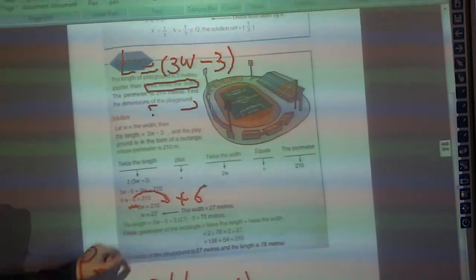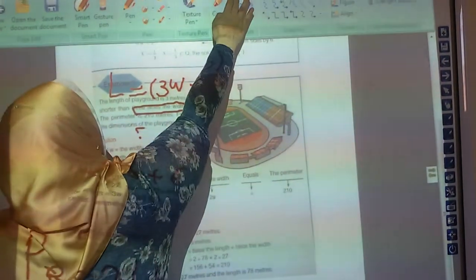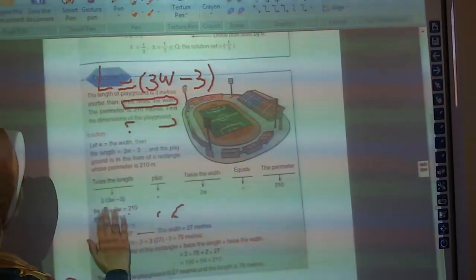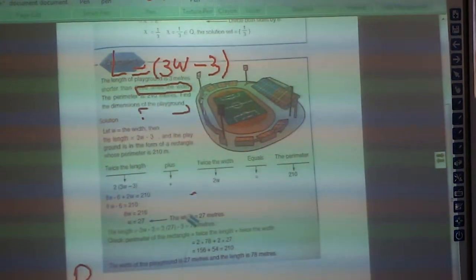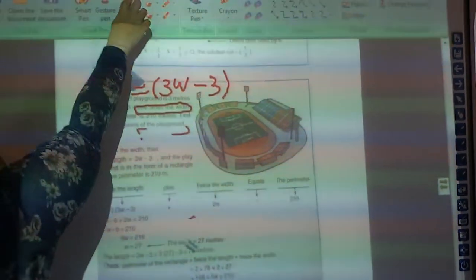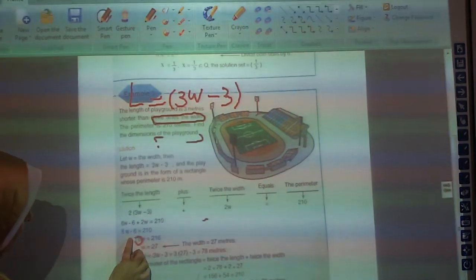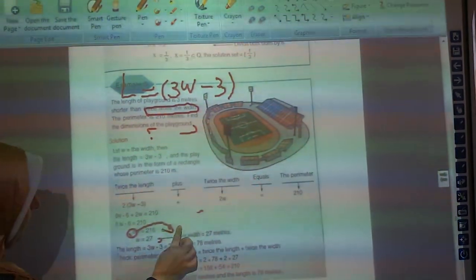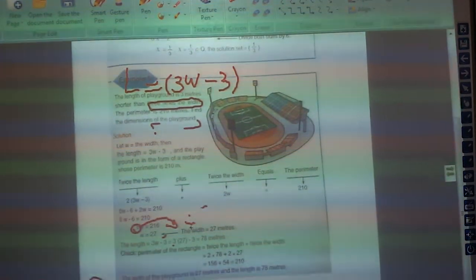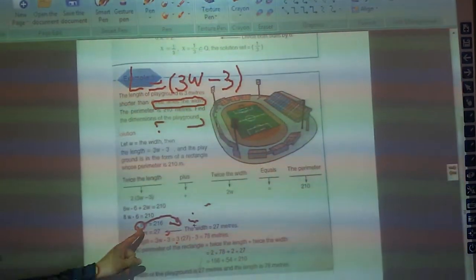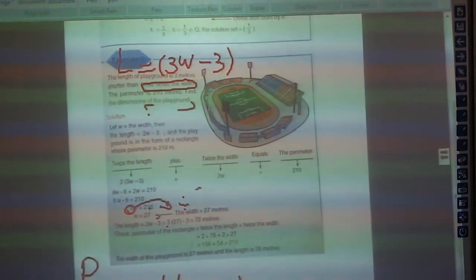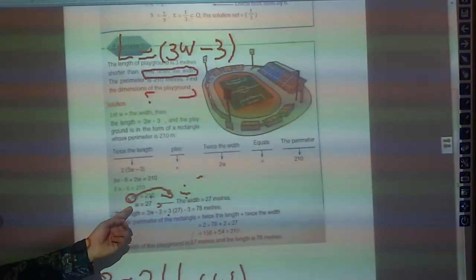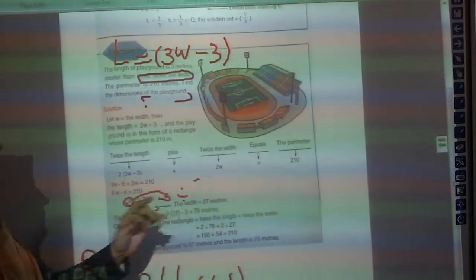Then what I'm going to do with the 8? 8W means 8 times W. So what I'm going to do? I'm going to take this 8 to the other side with divide. If you divide 216 by 8, it will give you 27. So I have here the width. The width is 27.